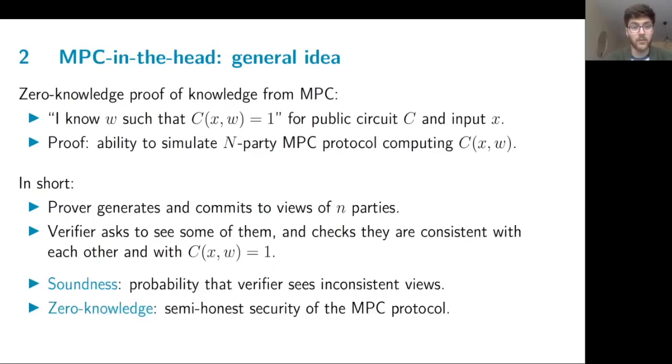The soundness of the zero-knowledge proof will be guaranteed by the probability that the verifier sees inconsistent views. So if the prover cheated in the construction of one of these views, there's a high probability that the verifier will see this. And the zero-knowledge property comes from the semi-honest security of the MPC protocol because the verifier opens only part of the views and therefore the secret sharing will prevent knowledge leakage.